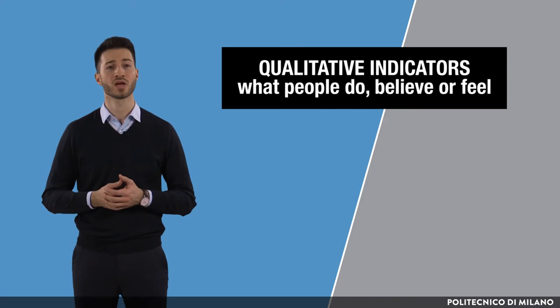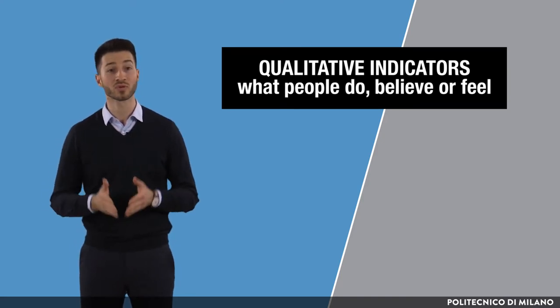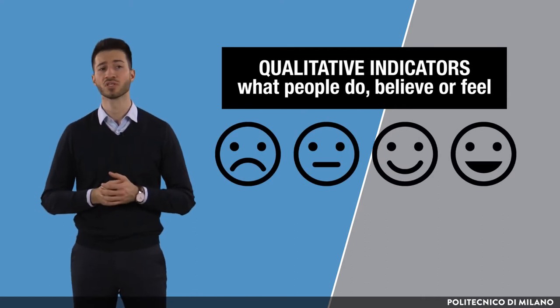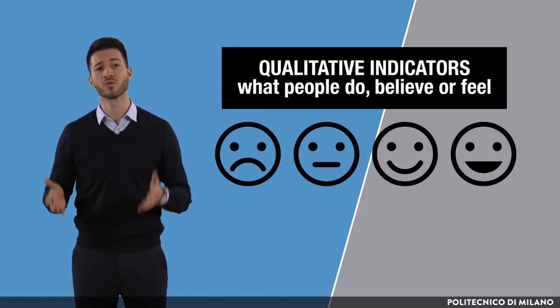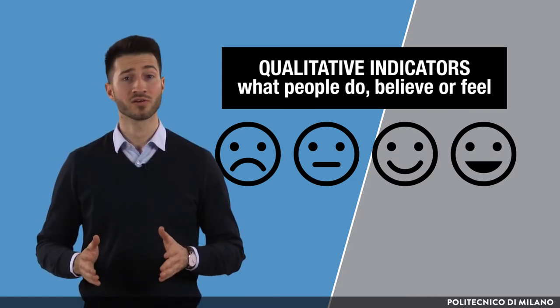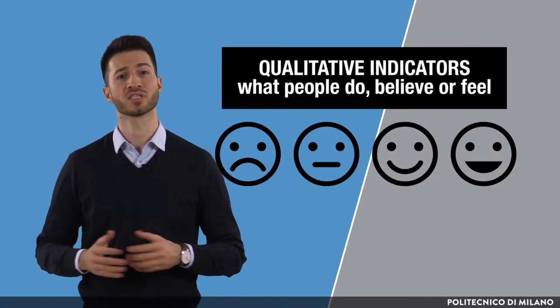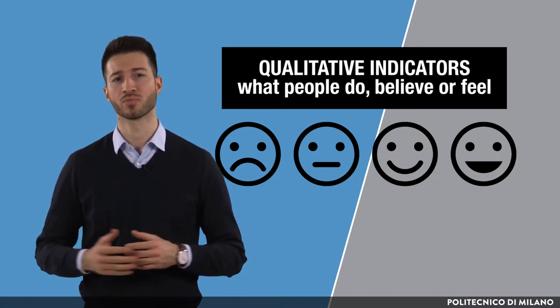Qualitative indicators summarize what people do, believe, or feel. For example, the level of satisfaction of entrepreneurs with their career choice or the degree to which individuals are interested in becoming entrepreneurs. Qualitative indicators are more complex, yet they may be more relevant for assessing long-term impact of policy programs.